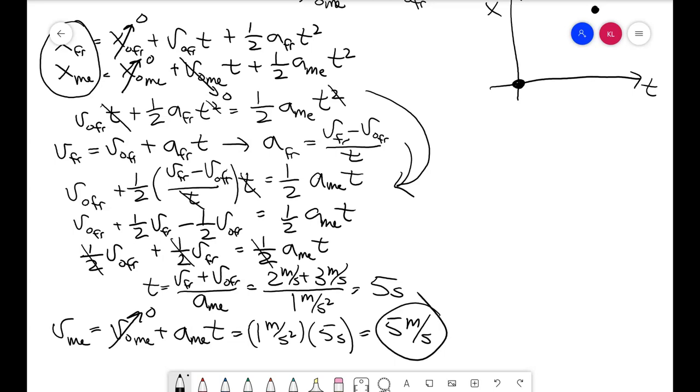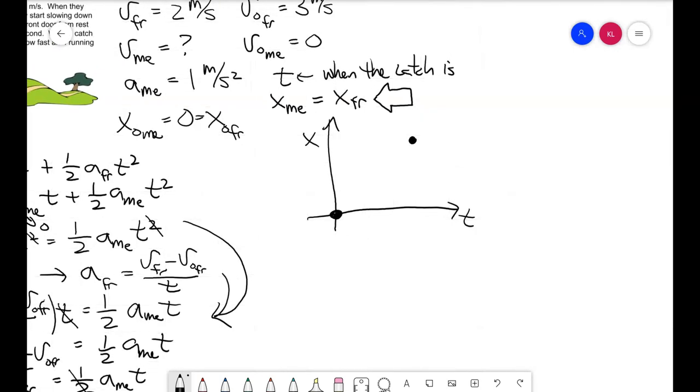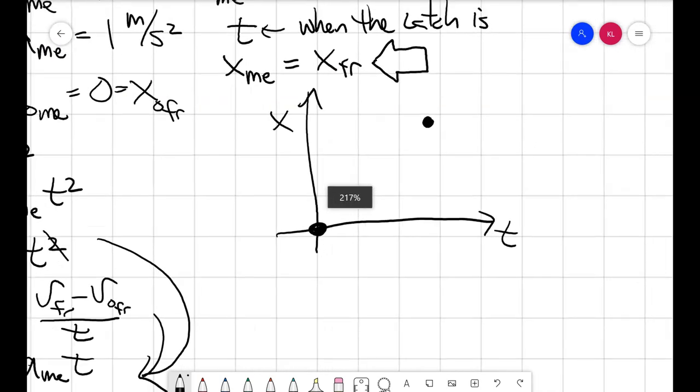If I'm going to go back up here and draw my graph, the graph looks something like this. My friend starts with some velocity and is slowing down. I start with no velocity and I'm speeding up. My friend's slope is 3 m/s and then the slope will be 2 m/s. I start with zero m/s and then go up to 5 m/s.